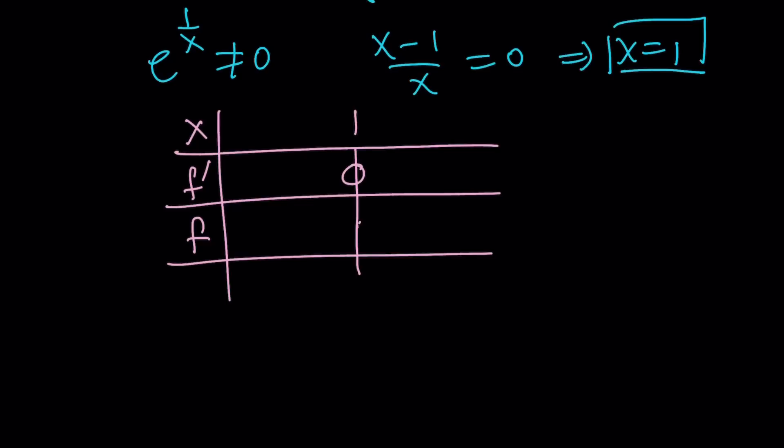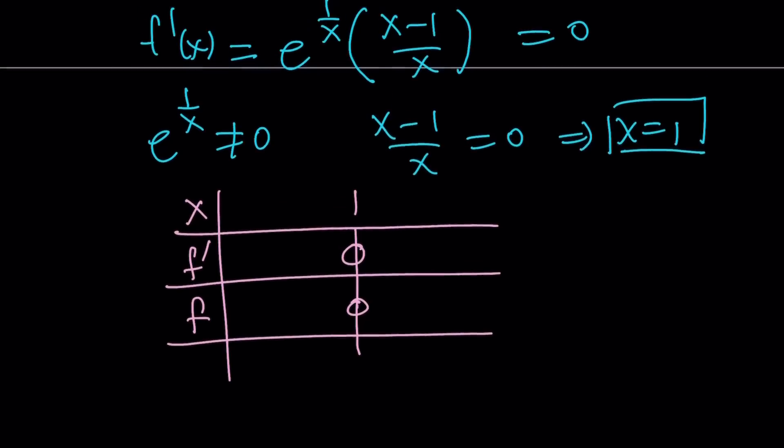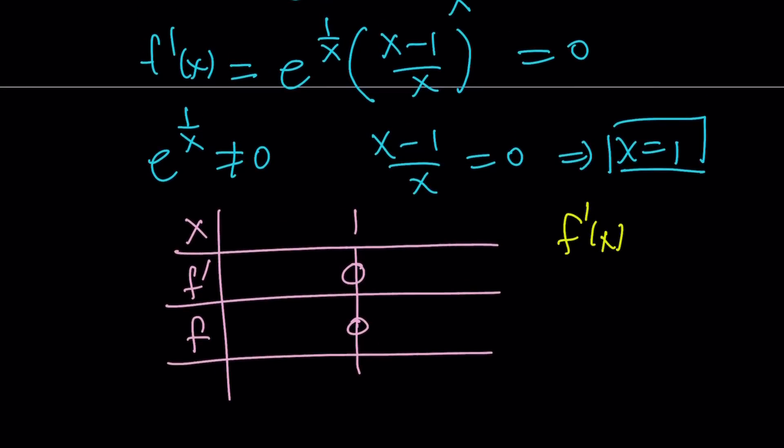Also for f, I can just put a mark here as well. Now, we want to know whether the derivative is going to be positive to the right of one or negative to the right of one because it's going to change sign. How can I tell? Well, just think about the derivative. It's f prime is e to the power of one over x, which is always positive, times x minus one over x. So if x is greater than one, obviously it's going to be positive. So you're going to be like a positive quantity. And you can always test it with something like two. You can use a test value.